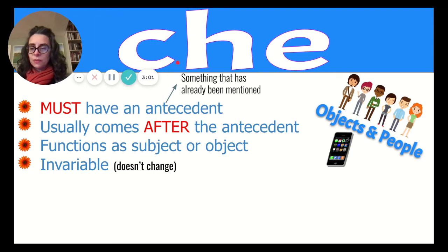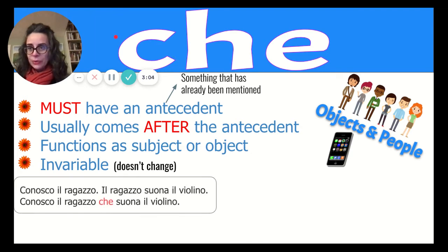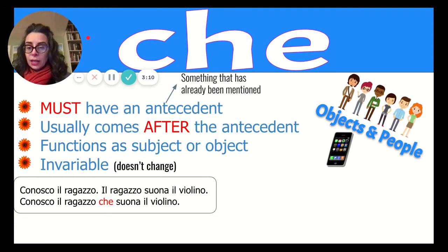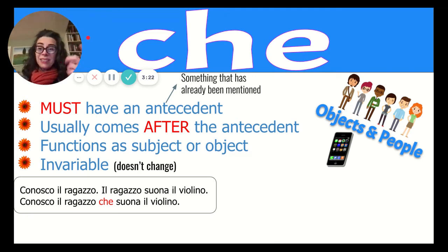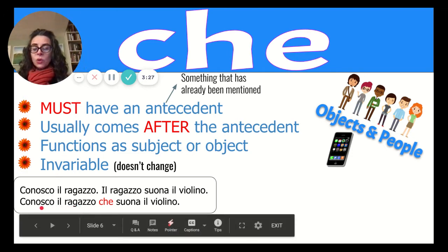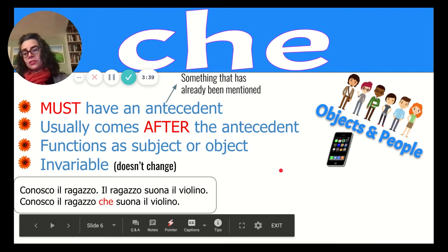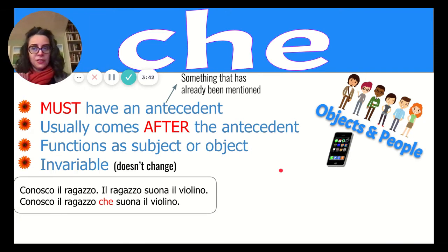The antecedent is something that has already been mentioned. For example: 'conosco il ragazzo' and 'il ragazzo suona il violino' — I know the boy, the boy plays the violin. You can connect them: 'conosco il ragazzo che suona il violino.' So nice — you connected two sentences. Che functions as a pronoun referring to il ragazzo, which came right before — that is your antecedent.